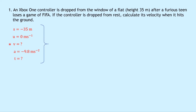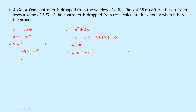Writing down our equation, V squared equals U squared plus 2AS, we substitute in the numbers to get 0 squared plus 2 times minus 9.8 times minus 35. So the two negatives will cancel out, and we get 686. Now remember that's V squared, so we need to square root it. Square rooting that gives us an answer of 26.2 meters per second.